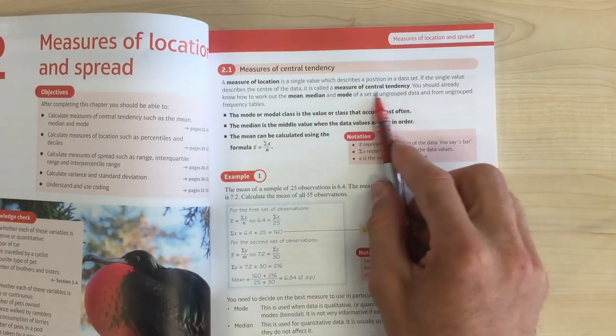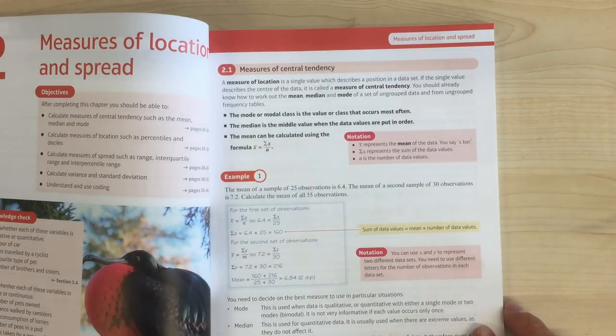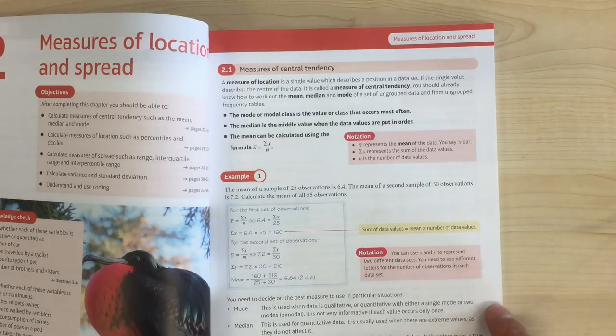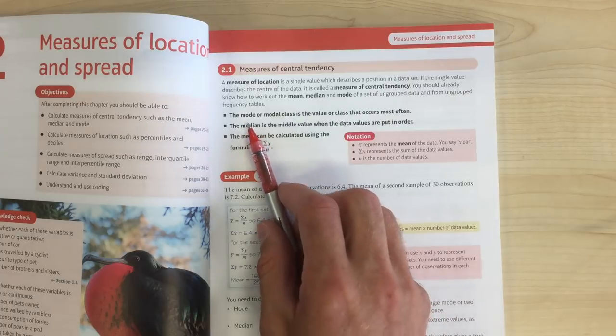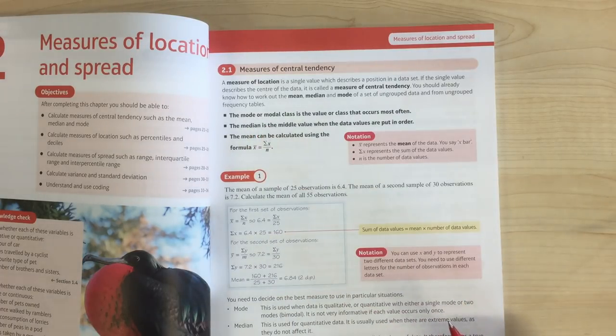And first of all we're talking about measures of central tendency. Now let's just stop for a bit and talk about what we mean by location, what we mean by spread, and then we'll come back to here and you can see already we're talking about mean, median and mode, right? So we're talking about averages, but let's just stop and think about what we mean.